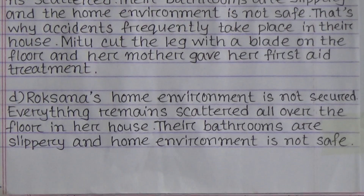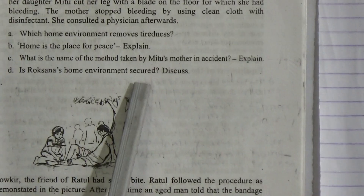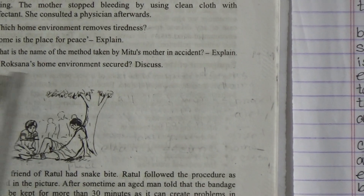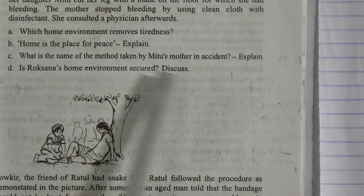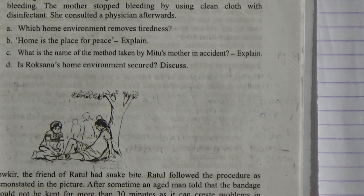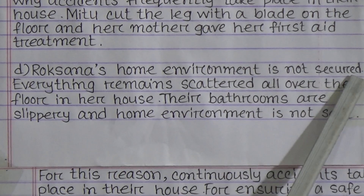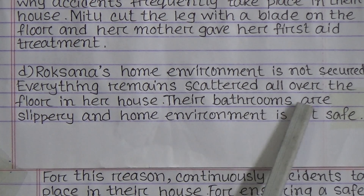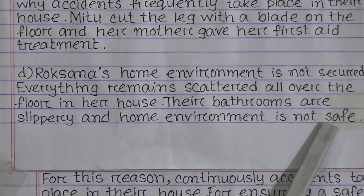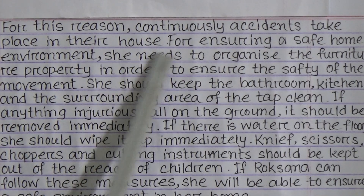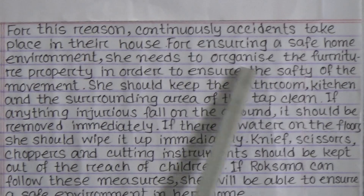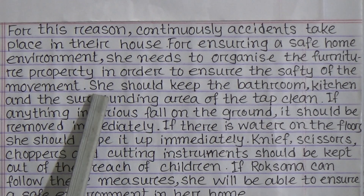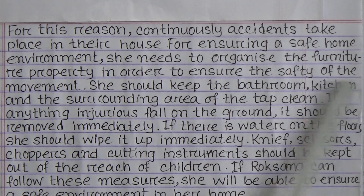Question D: Is Roxana's home environment secure? Roxana's home environment is not secure. Everything remains scattered all over the floor, their bathrooms are slippery, and the home is not safe. For this reason, accidents continuously take place. To ensure a safe home environment, she needs to organize the furniture properly in order to ensure the safety of movement.